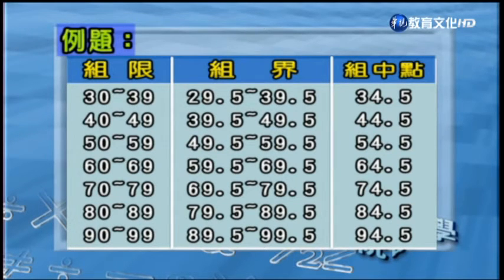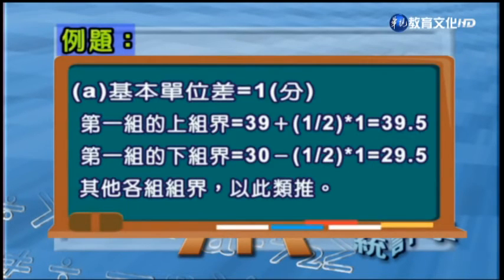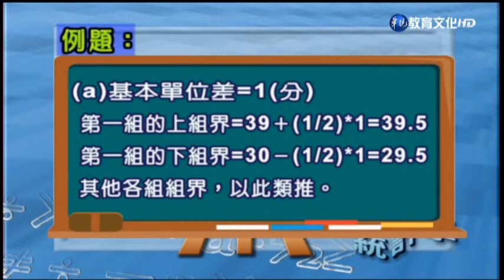70分的寬度剛好可以涵蓋真正資料的全距65分，這樣是非常適當的。如果組數取6組，組距就必須用11，和10比較起來就比較不好。接下去下一個步驟要開始定組限跟組界。在定組限跟組界的時候要注意，以圖表來看，由30到39分就是第一組的組限，40到49分是第二組的組限。組界是把組限加減1/2個基本單位差；因為這是考試分數，基本單位是1分，所以第一組的上組界就是39加0.5等於39.5分。